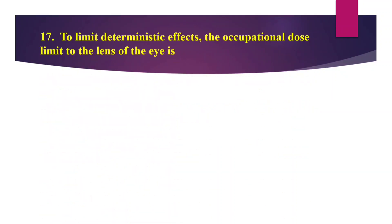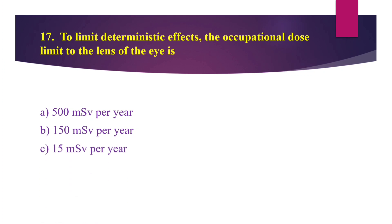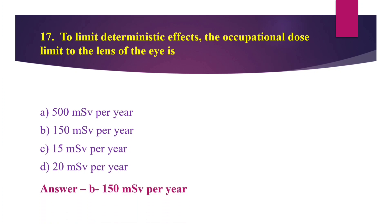Moving on to question 17. To limit deterministic effects, the occupational dose limit to the lens of the eye is: option A, 500 mSv per year; option B, 150 mSv per year; option C, 15 mSv per year; and option D, 20 mSv per year. The answer is option B, 150 mSv per year.